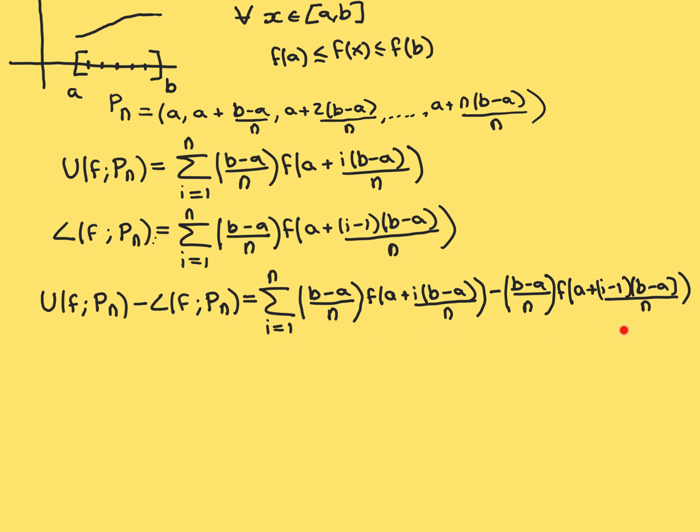I've written down what that difference is here. It does look hideous, but don't worry — this is going to become so, so simple. This is why the proof is really beautiful: because of how horrific it looks initially, but how beautifully simple it becomes, because this sum is going to telescope.